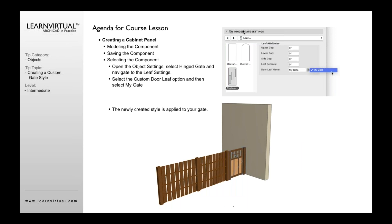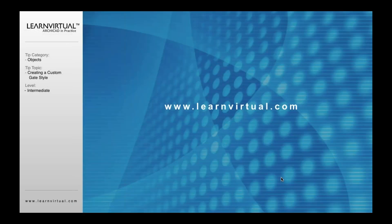And then in your hinge gate settings, you're going to go to Leaf, select the Custom option, your gate is available, and now you've got your custom gate. And that's really all there is to it to creating a custom gate within ARCHICAD. And that is our tip of the week.